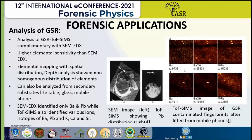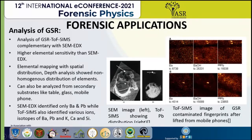Elemental mapping from TOF-SIMS shows the spatial distribution of elements on the sample. The intensity of the signal determines the brightness of the images produced. Images show how elements like barium, hydroxide, and lead are distributed in the sample. A comparison can be made between a scanning electron microscopy image and a TOF-SIMS image showing the lead distribution.